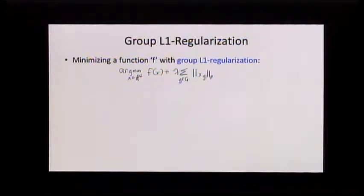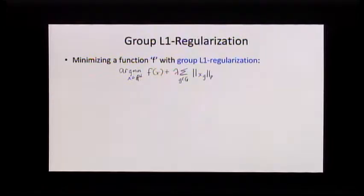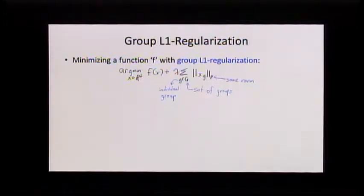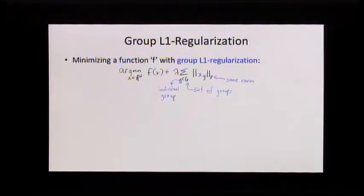That leads us to this thing called the group L1 regularizer. I want to minimize a loss function f(x) — that could be squared error, logistic loss, L1 loss, or whatever — let's stick with differentiable for now. This term here is the group L1 regularizer. Little g is the individual group, and big G is the set of groups. In the previous example, big G would have two elements, and little g would be like the Vancouver-Burnaby-Surrey group, and the other element would be the three age categories.